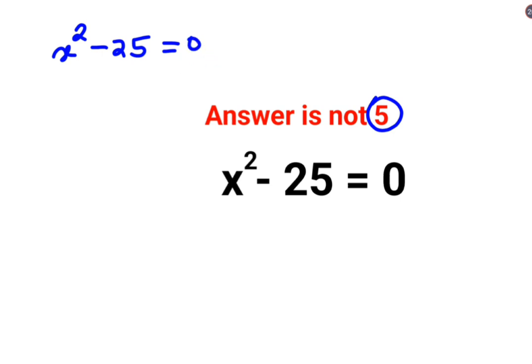So in order to find the value of x, you need to add 25 on both sides or rather shift the constants on the other side of the equal to. So here this gets cancelled. So x² - 0 is just x² equals to 0 + 25 is 25.